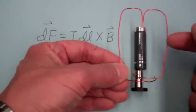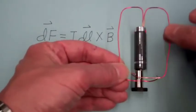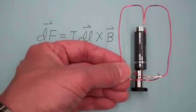And what we'll see is there's going to be a force perpendicular to these two sides which will cause this wire to rotate.